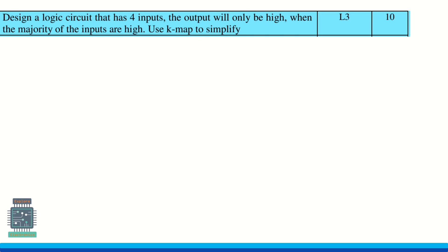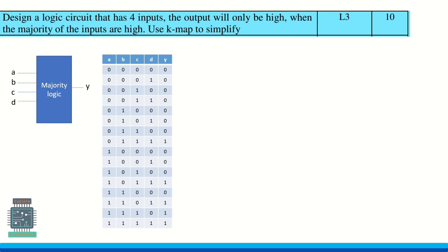Here the question says there are four inputs to a logic circuit which will generate one output. It is high when majority of the inputs are high. There are four inputs, so majority of the inputs high means at least three inputs should be high. Then the output goes high.